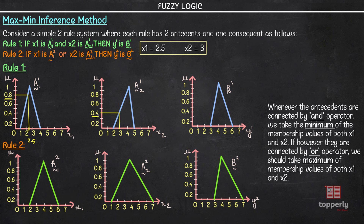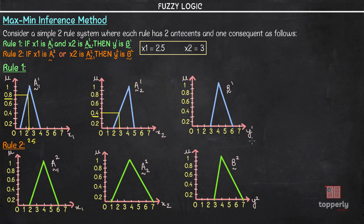Since the minimum is 0.4, we extend this value of 0.4 onto the output y1. When we extend 0.4 and shade the area, this becomes our output area y1.